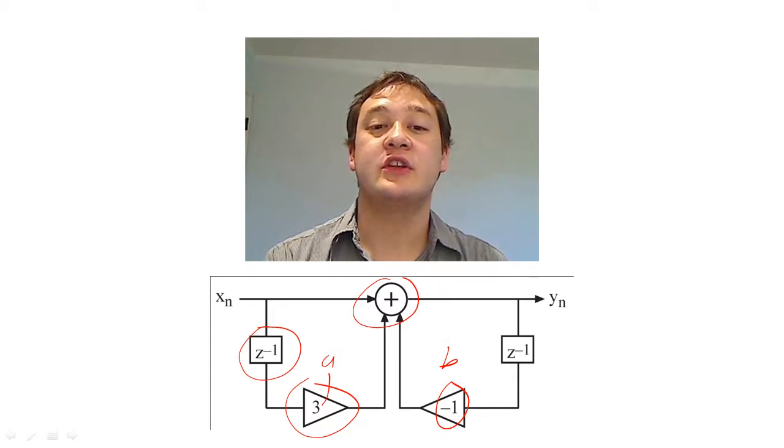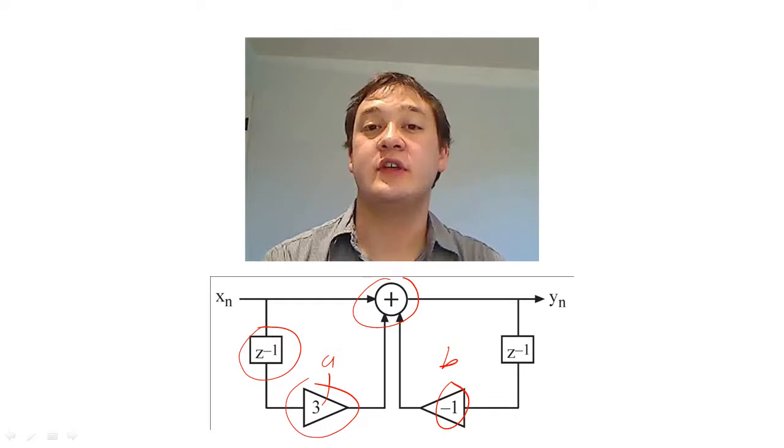To begin our discussion of digital filters, we need to discuss the Z-transform. The Z-transform is a complex function of complex variables that allows us to break down a signal, X of n, into an infinite number of simpler signals, much like the Laplace transform of analog signal processing.